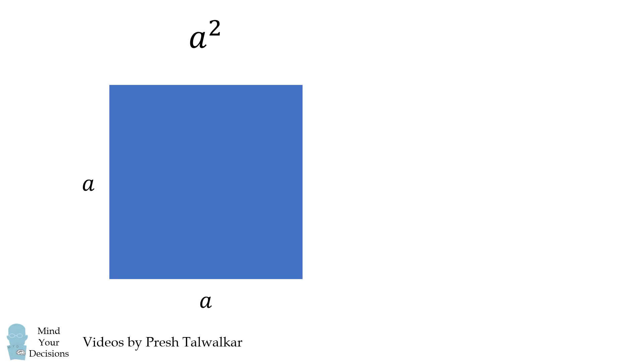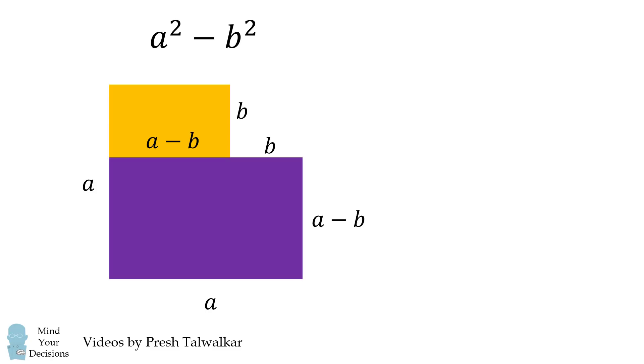Start out with one square with an area of a squared and another square with an area of b squared. If we subtract the area of b squared from a squared we have the following shape. We can now dissect this shape into different rectangles and we'll connect sides of equal length.